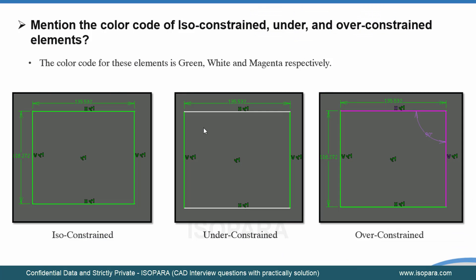The next question is: what colors are used for ISO constrained, under-constrained, and over-constrained elements? If a geometry is fully constrained, everything is shown in green — that is ISO constrained. If something is not fully constrained, elements or lines that don't have specific dimensions with respect to the origin are shown as under-constrained in white. If over-constraints are applied to any element, that will be shown in magenta color.